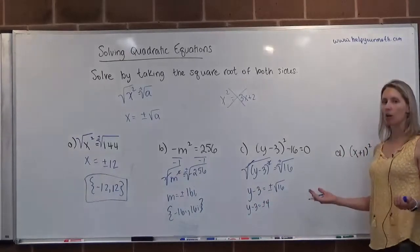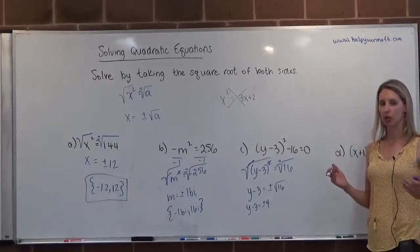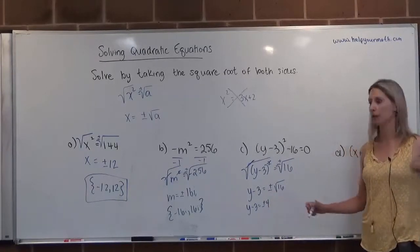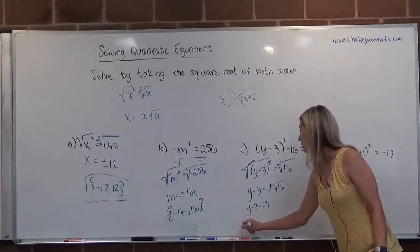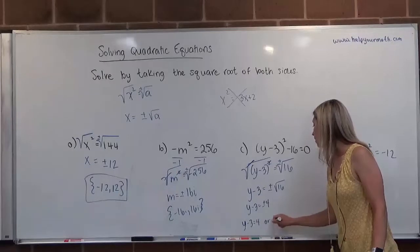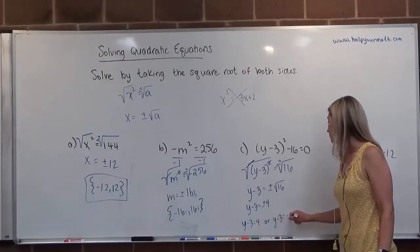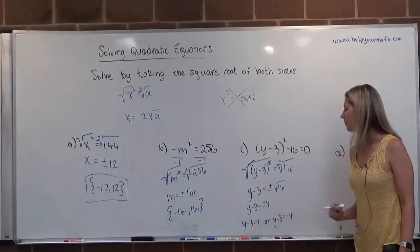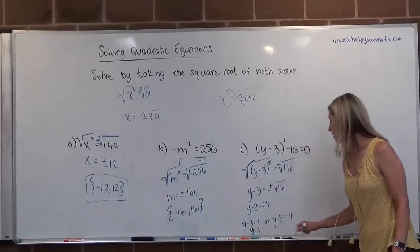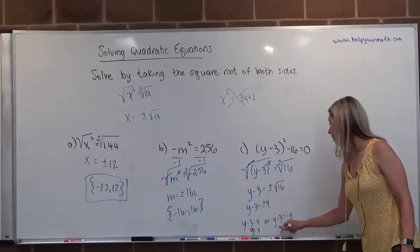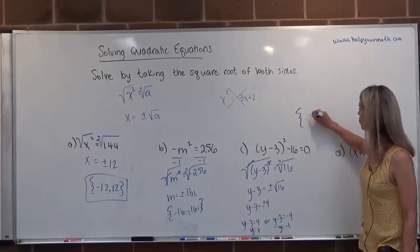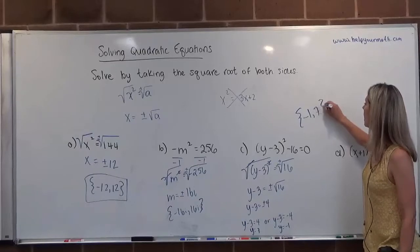From here, we break this up and look at our two cases. Case 1 is when it's positive 4, and case 2 is when it's negative 4. So we rewrite this as y minus 3 equals 4, or y minus 3 equals negative 4, then solve each one separately. Adding 3 to both sides in the first case gives y equals 7. Adding 3 to both sides in the second case gives y equals negative 1. So letter c has two solutions: negative 1 and positive 7.